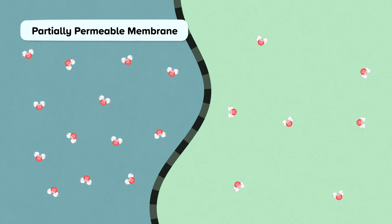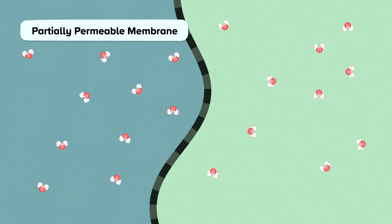If the cell is less concentrated than the surrounding solution, that means there's more water inside the cell than outside, and water will flow out of the cell until there is the same number on both sides of the membrane. Remember, some water molecules will still move against the concentration gradient, but it is the net movement that we're interested in.